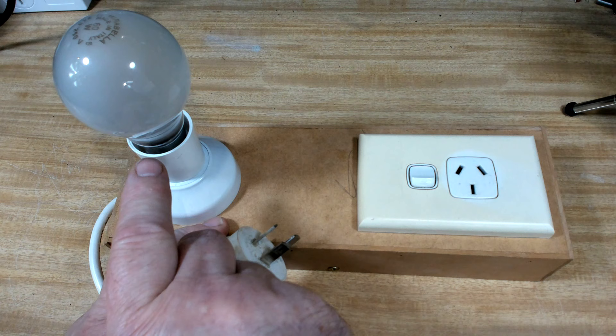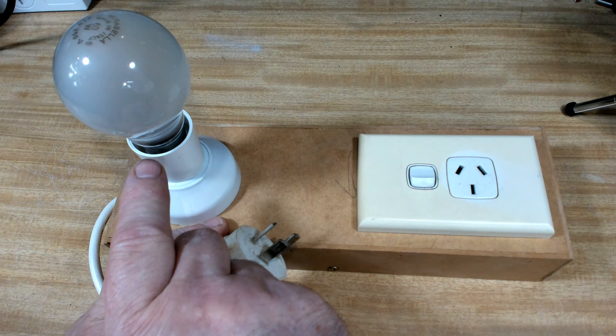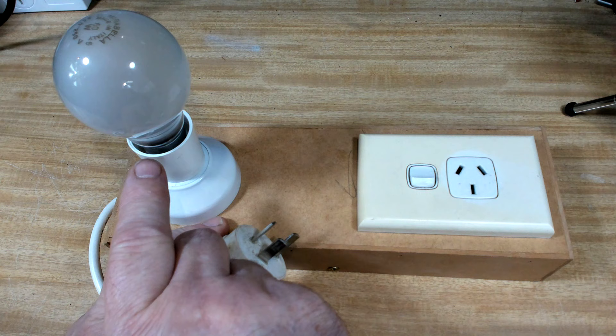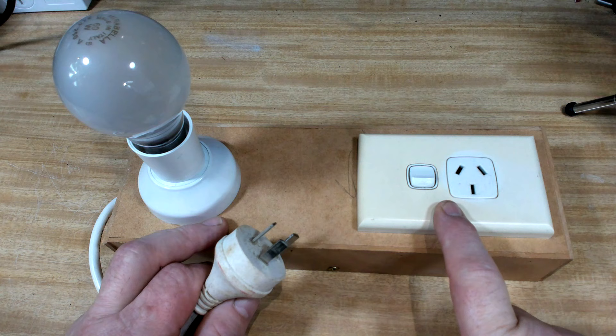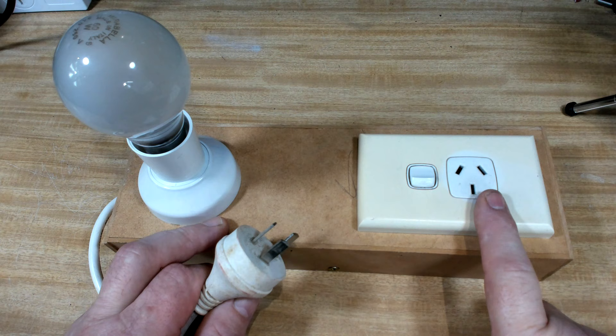The light bulb filament when it's cold has a very low resistance. You put some current flow through it and it heats the filament. The filament resistance increases and limits the current flow and turns the current flow into heat and light. So we use that feature to protect the radio or whatever you've got plugged in here from short circuits or partial shorts.